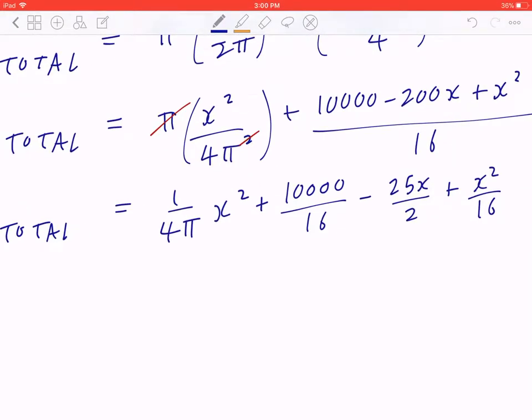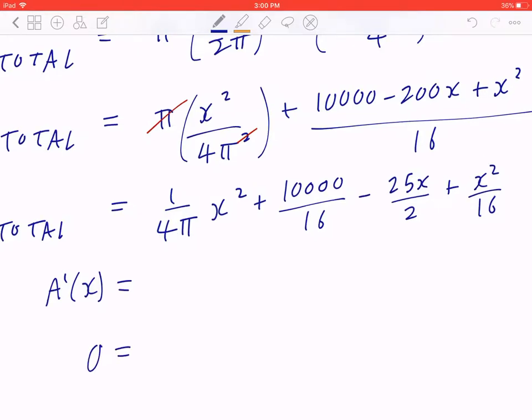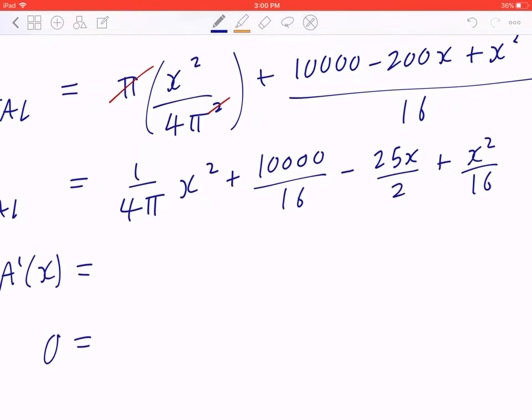Now that you've expressed area as a function of x, you're going to find the derivative, you're going to set this to 0. So when you differentiate this, that's going to be 2 divided by 4 pi times x. The second term, because it's a constant, the derivative is going to be 0 minus 25 divided by 2 plus 2x divided by 16.